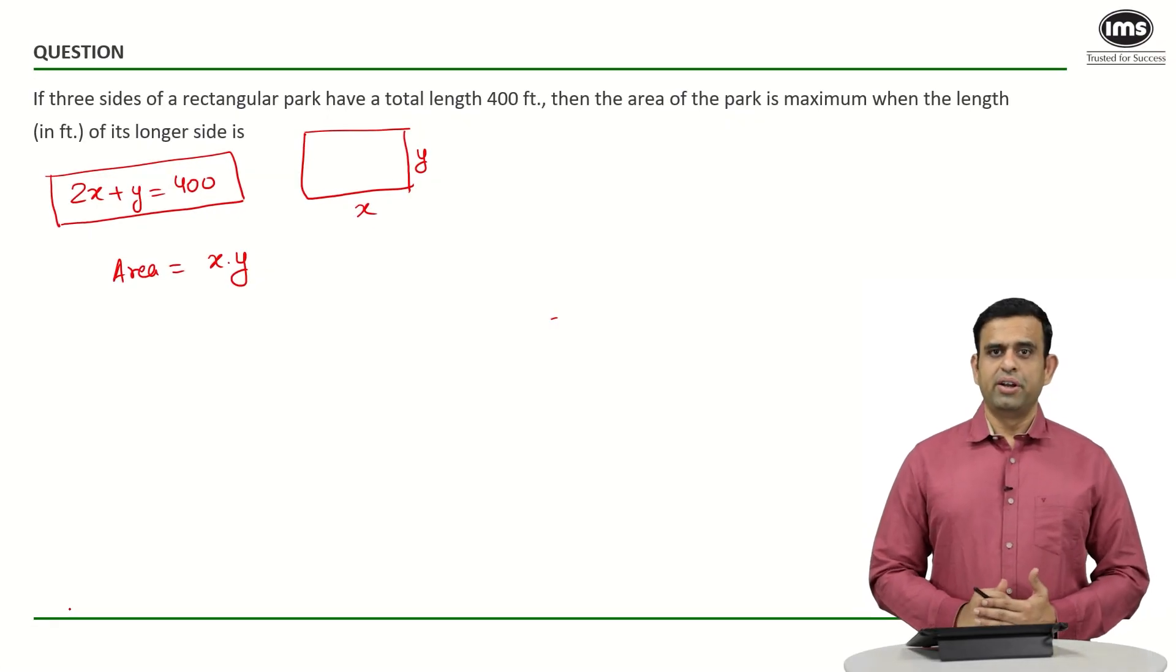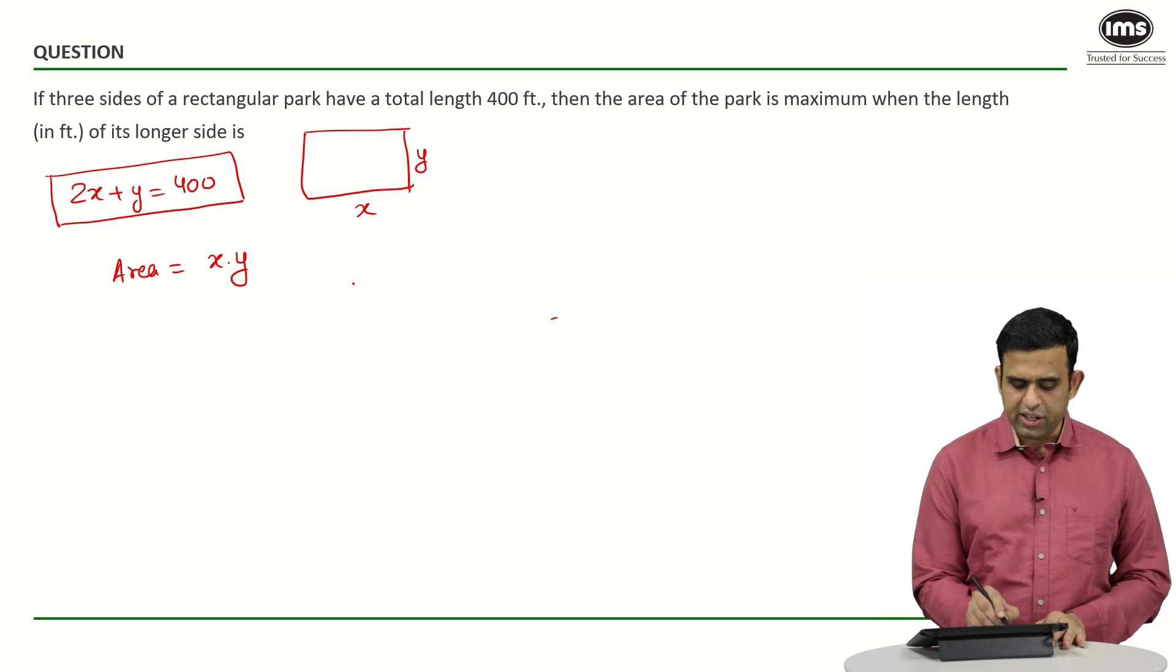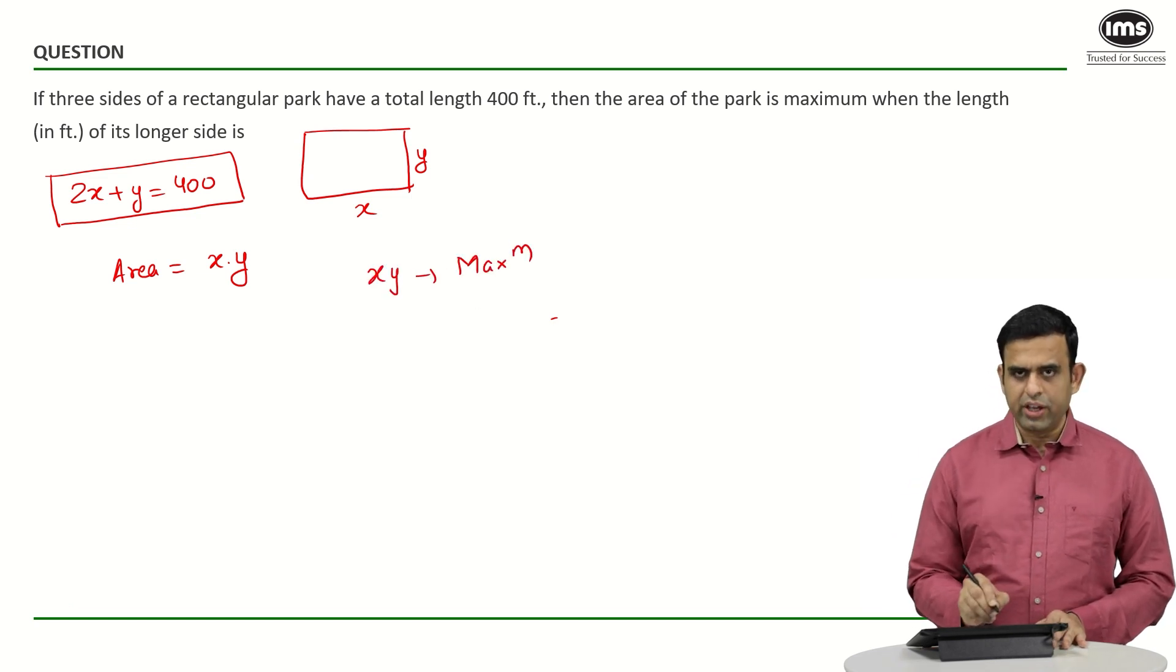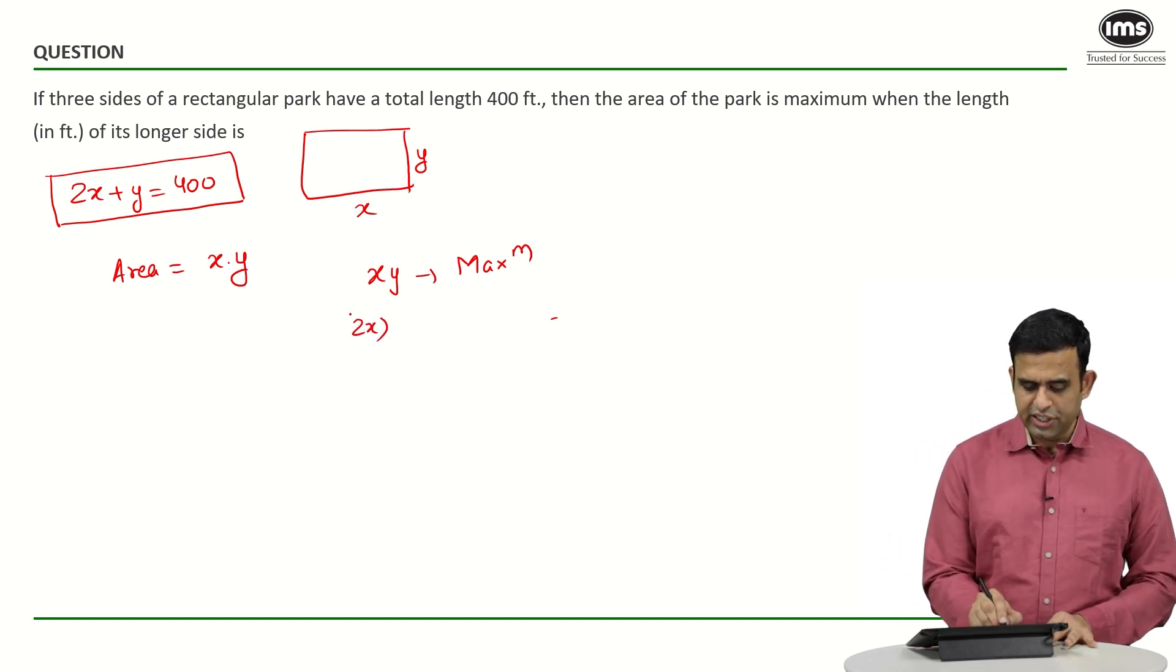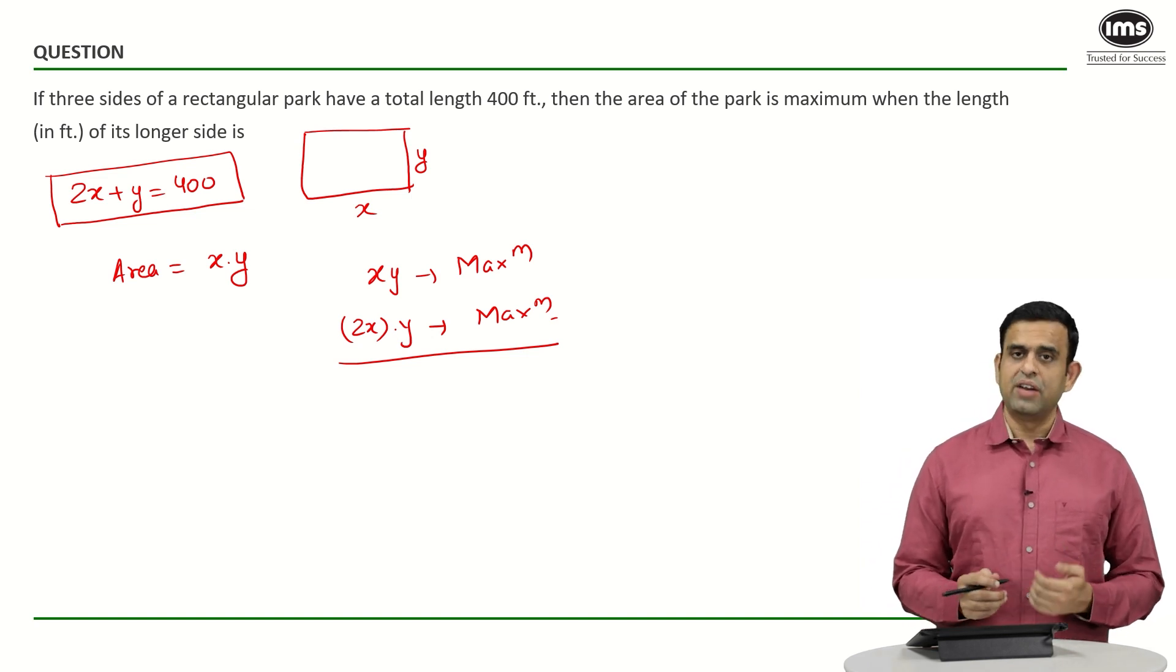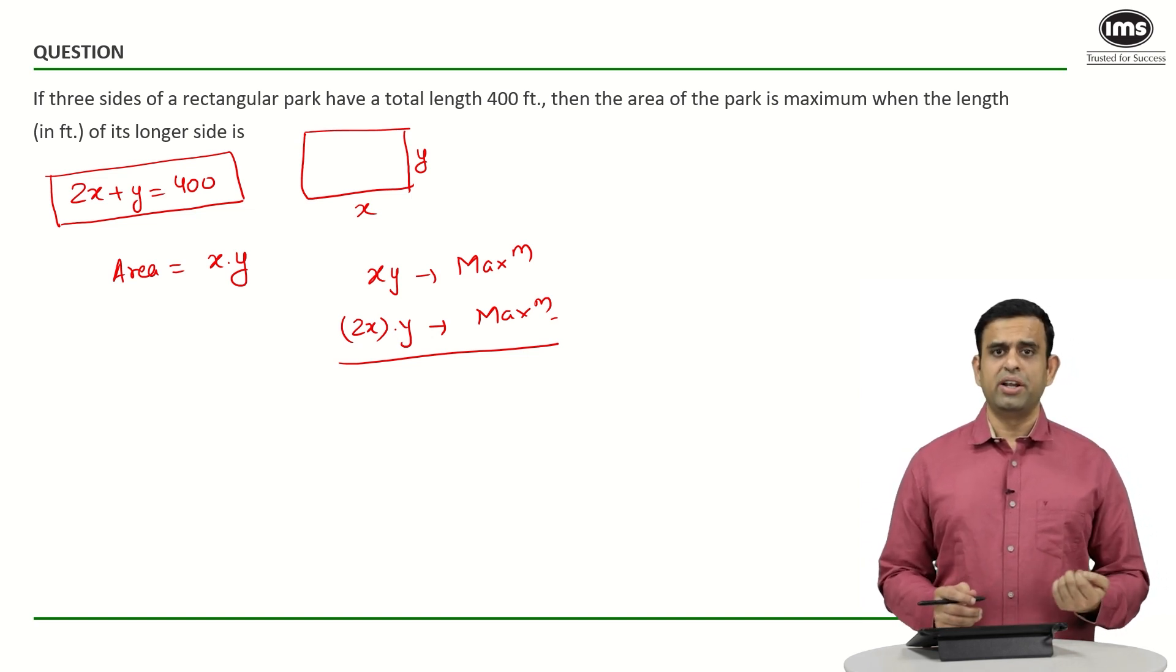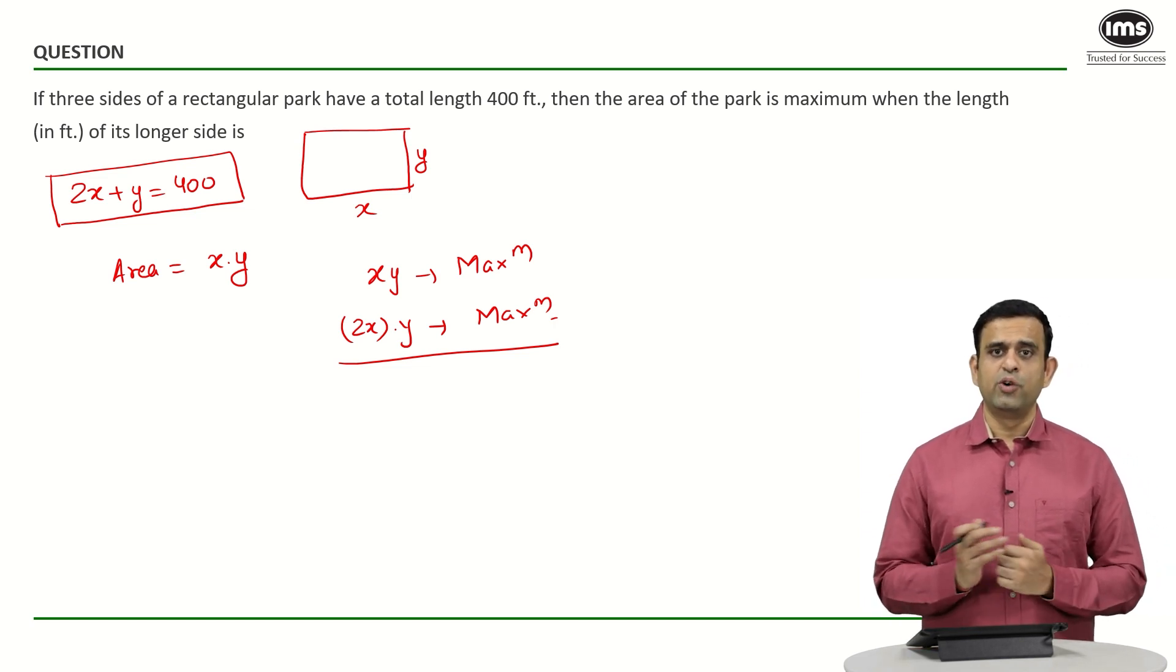Let's look at one more way to solve this question. Since I want to maximize the area, I want x into y to be maximum. If I want x into y to be maximum, can I also say that 2x into y is also maximum? We're going to use the concept that AM is greater than or equal to GM. Whenever the sum is constant and I want to maximize the product, it happens when the two terms are equal.